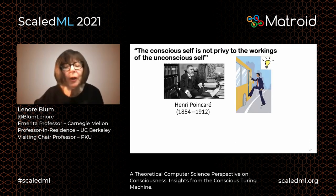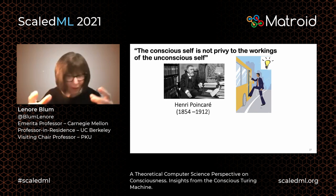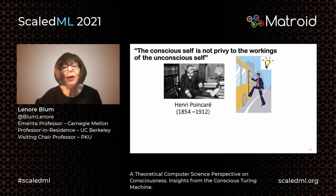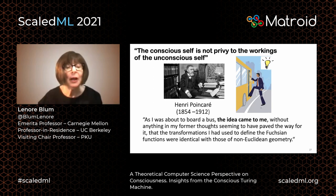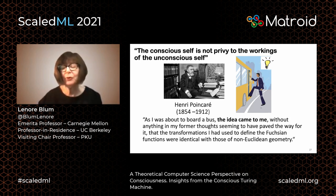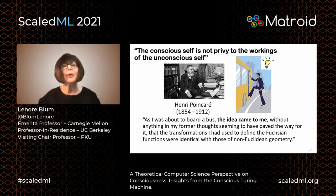Here's another well-known example. Henri Poincaré, a famous mathematician, was working on a really tough math problem day and night, not getting any sleep, not getting anywhere. Luckily, a friend invited him on a hiking vacation. As he was about to board a bus, the idea came to him without anything in his former thoughts seeming to have paved the way for it — that the transformations he had used to define the Fuchsian functions were identical with those of non-Euclidean geometry. In other words, there were these two areas of mathematics that Poincaré knew very well, but he'd never seen the connection before. Then as he was about to board the bus, the idea came to him that they were isomorphic.